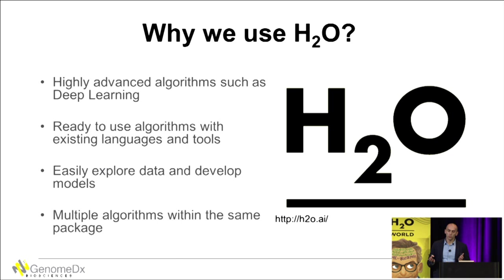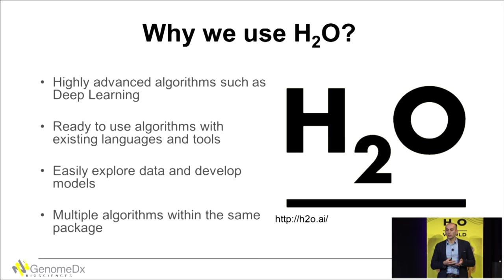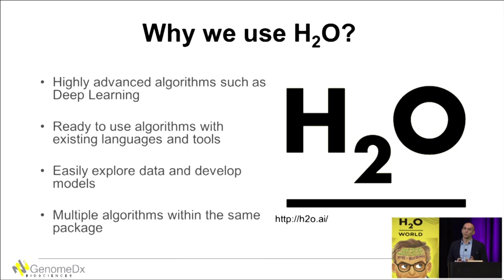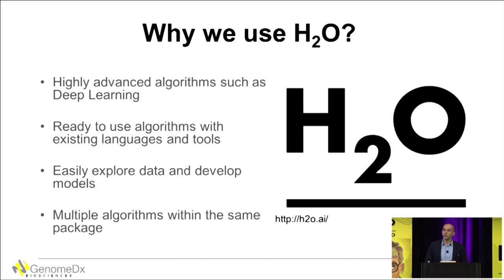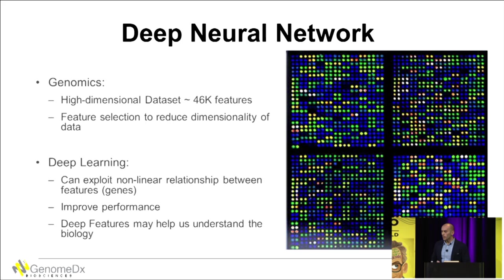So why did we get interested in H2O? We always try to use whatever machine learning algorithm is available and apply it to our data. One thing we got interested in was deep learning, and I found that H2O had implemented it. When I started using H2O, I found they have all these algorithms ready to use — I just plug in my data, set my tuning parameters, and run it, getting good results. They have a web user interface where I can build models and see how each cross-validation is performing. Most importantly, they implemented many algorithms — GLM, deep learning, and random forest — in the same package, avoiding incompatibility issues between packages.